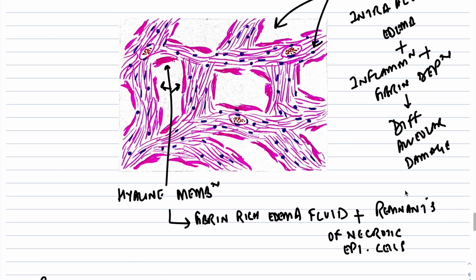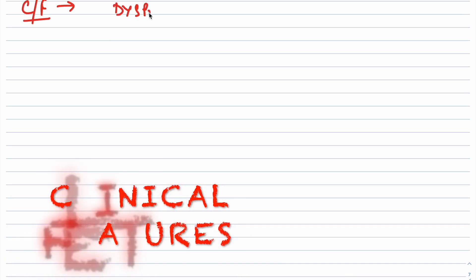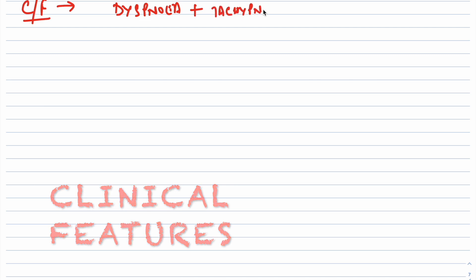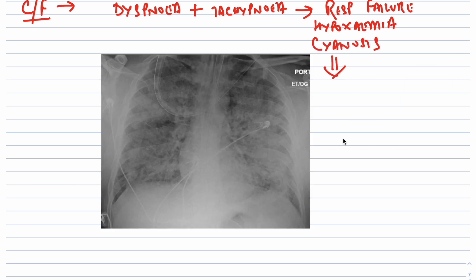In the proliferative or organizing stage, type 2 pneumocytes proliferate and there is formation of granulation tissue in the alveolar walls. In most cases, this granulation tissue will resolve leaving minimal functional impairment, but in some cases fibrosis might continue, leading to fibrosis of the alveolar septum. Clinically, patients with ARDS-ALI present with profound dyspnea and tachypnea, followed by increasing respiratory failure, hypoxemia, cyanosis, and ultimately diffuse bilateral infiltrates on radiographic examination.